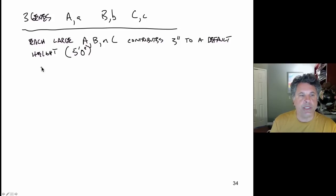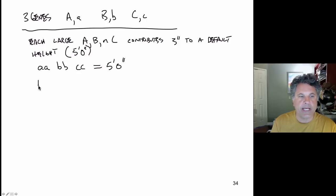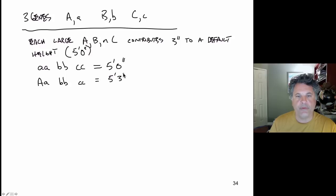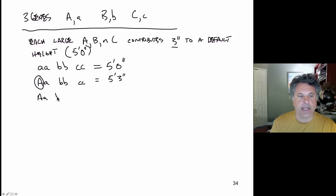So if you have an individual that is homozygous little a little a, homozygous little b little b, and homozygous little c little c, their height is five feet zero inches. Whereas if you have an individual that is heterozygous for the A gene and homozygous small allele for both B and C, that would yield five feet three inches — one large allele contributing three inches to the default height. If we had a triple heterozygote in our model, we would have five feet nine inches because we have three large alleles.